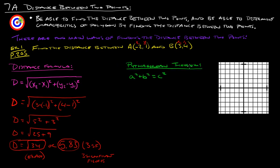Another way to do it is to use the Pythagorean theorem: A squared plus B squared equals C squared. What you want to do is plot these two points on a graph and turn them into a triangle. So A is at negative 2, 1 — there's A — and B is at 3, 4 — there is point B. Now what you want to do is just turn this into a right triangle. You can either go up and over, or over and up — doesn't matter.